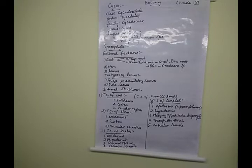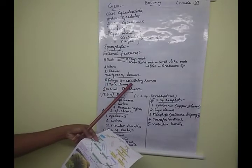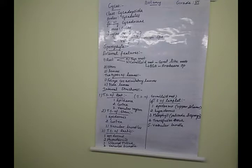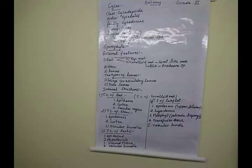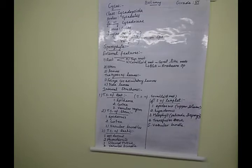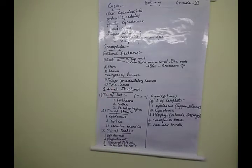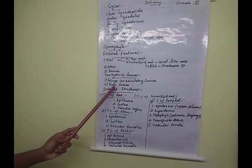These are the features present in the foliage or assimilatory leaf, mainly involved in photosynthesis. The next one is scale leaves: they are very small, brown-colored leaves, triangular in shape, also covered with ramenta, and their major function is giving protection to that particular leaf region.